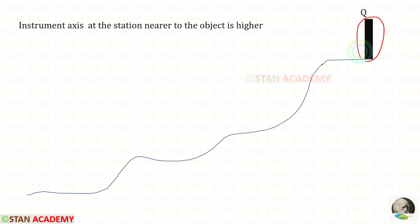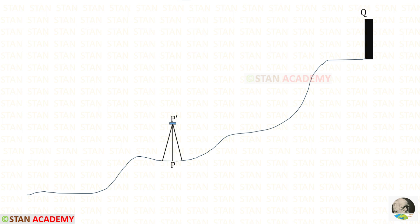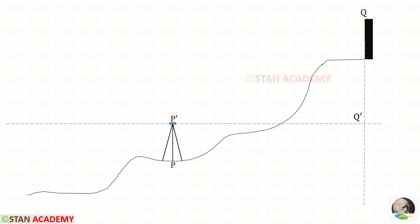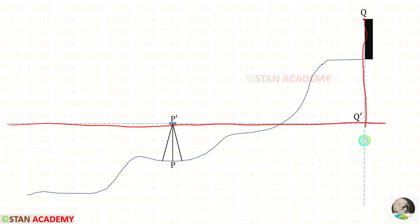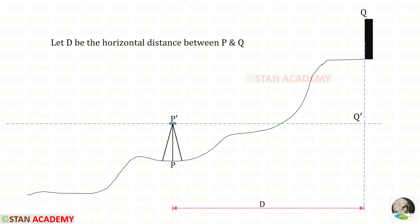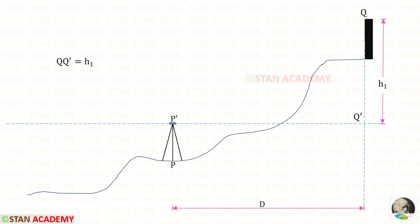Let us assume that this object is a tower. Let us keep this point as Q at the top of the tower. We need to find the reduced level of the top of the tower. Let us select a point P and install a theodolite there. P' is the vertical projection of point P. Along the horizontal axis of the telescope, we make a horizontal projection, and from point Q we make a vertical projection. Let us keep this point as Q'. Let us keep the horizontal distance between P and Q as D, and the height of Q' as H1.